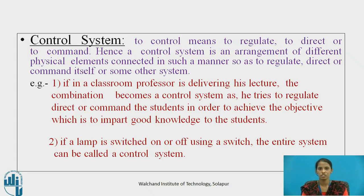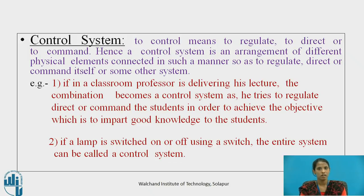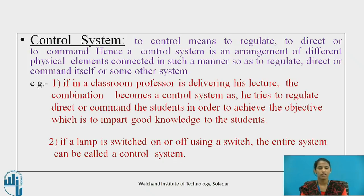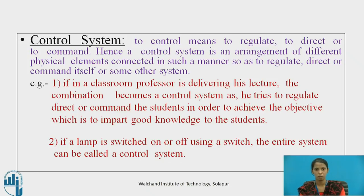What is a control system? To control means to regulate, to direct, or to command. Hence, a control system is an arrangement of different physical elements connected in such a manner so as to regulate, direct, or command itself or another system.